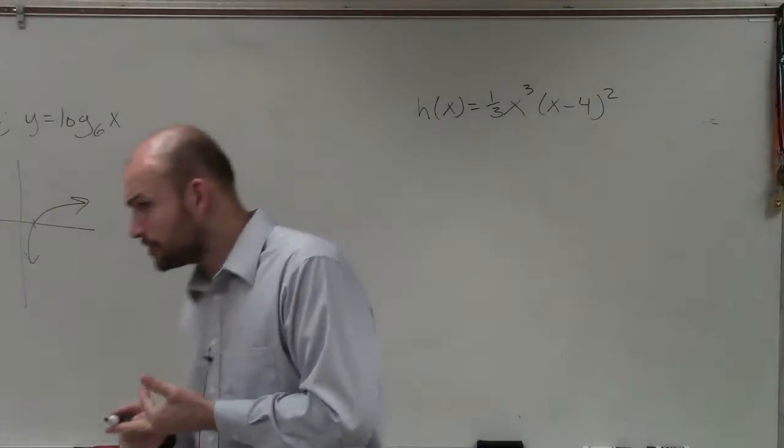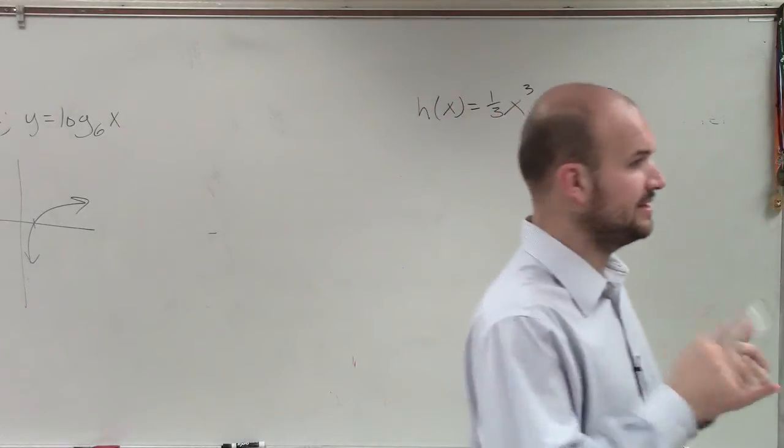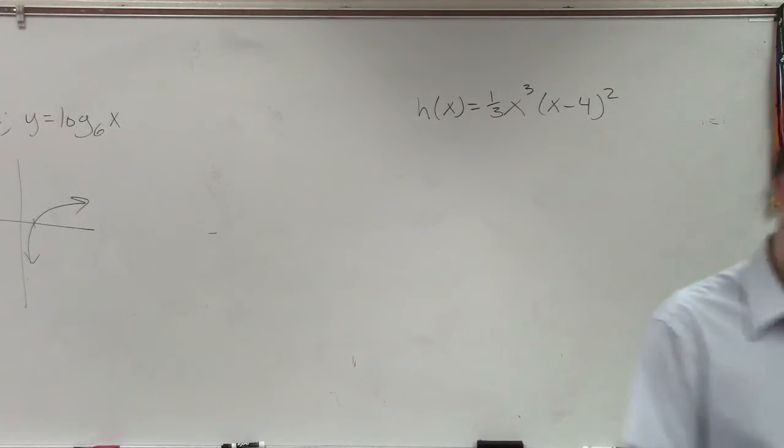End behavior, find the zeros, determine the multiplicity, and then sketch the graph. Correct? Something like that? OK.